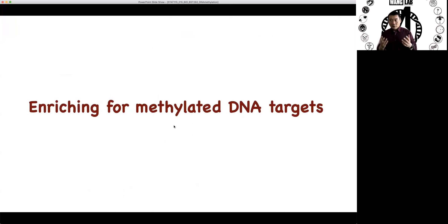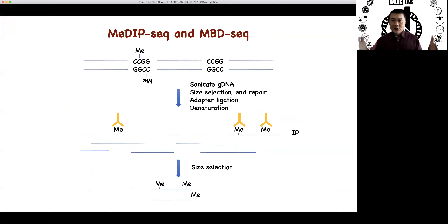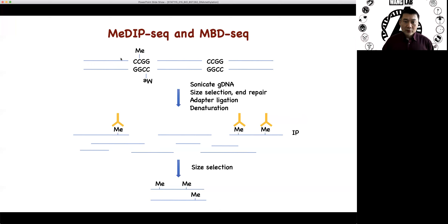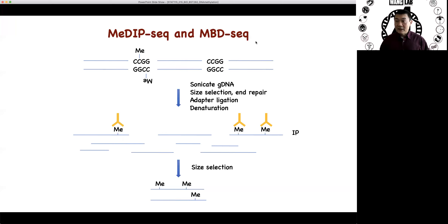So first, enrichment-based. This is actually very simple — it's just like ChIP-seq, except easier because you don't even handle chromatin. You handle genomic DNA, which is much more stable than chromatin. So here you rely on enzymes or antibodies that recognize mesulated cytosine. For example, antibodies recognize cytosine, and you do an immunoprecipitation — take the genome, sonicate, use antibody to pull down mesulated pieces, and you can sequence them. The representative technologies are MeDIP-seq, which uses an antibody, and MBD-seq, which actually uses a methyl binding protein, and then pulls that binding protein down to enrich for mesulated regions.